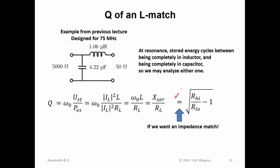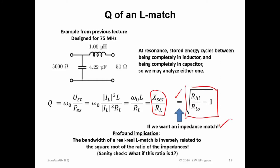Now, taking advantage of that knowledge, we can say that this thing here is equal to this thing here, just relating those two concepts. That is if we want an impedance match. So profound implication here. The bandwidth of a real-to-real L match is inversely related to the square root of the ratio of the impedances.